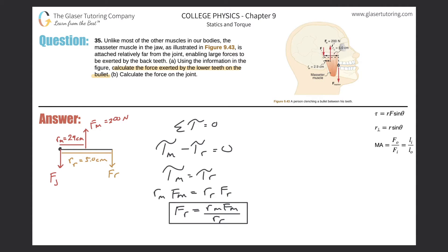So F_r is going to be equal to—let's plug in those values. You can leave these in centimeters if you want, but I convert them into meters—rather be safe than sorry. The values are in centimeters, so I'm going to convert them into meters. We have 0.029 multiplied by the force of the masseter muscle, which was 200 newtons.